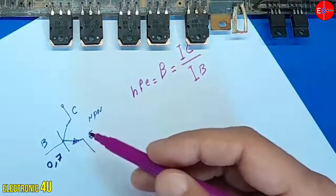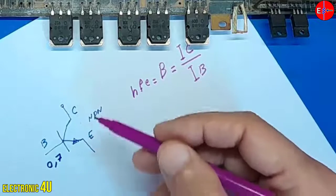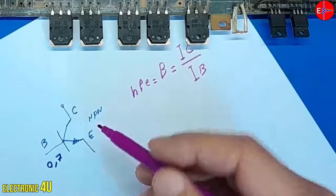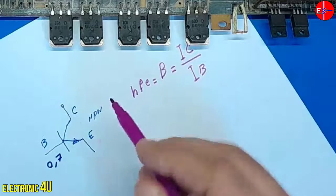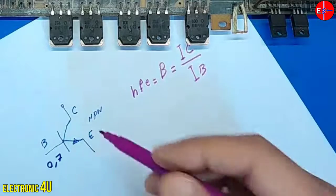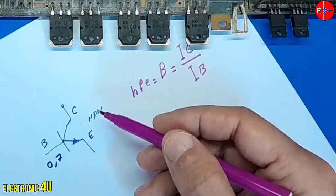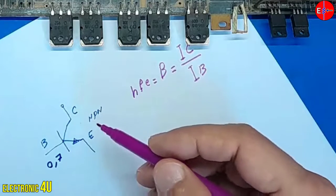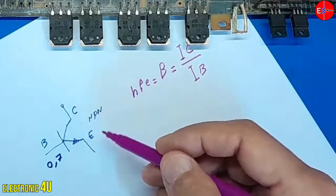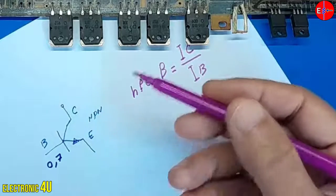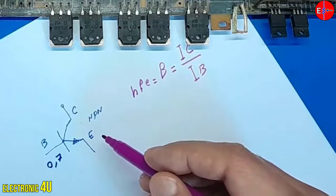We want to get a lot of current from this transistor to supply the current required by the consumer. The consumer can be a motor, a lamp, or anything. If we want to use an NPN transistor, often the voltage enters the collector and then reaches the consumer. But in a PNP transistor, the voltage enters the emitter and not the collector.